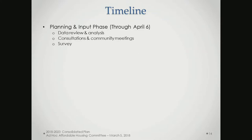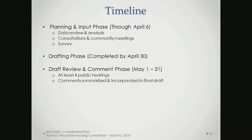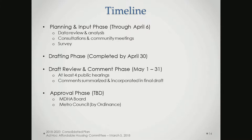Our timeline has us in the planning and input phase through mid-April. We'll complete our draft by April 30th and release it May 1st, available for public review and comment through the end of May. During that time we'll have at least four public hearings in different parts of the county at different times of day, including a Saturday. We won't submit to HUD until we know our final budget, which depends on when Congress passes a budget. Once signed, HUD has 60 days to notify our funding level. The plan will then go before the MDHA board and, as a new five-year plan, before Metro Council as an ordinance.